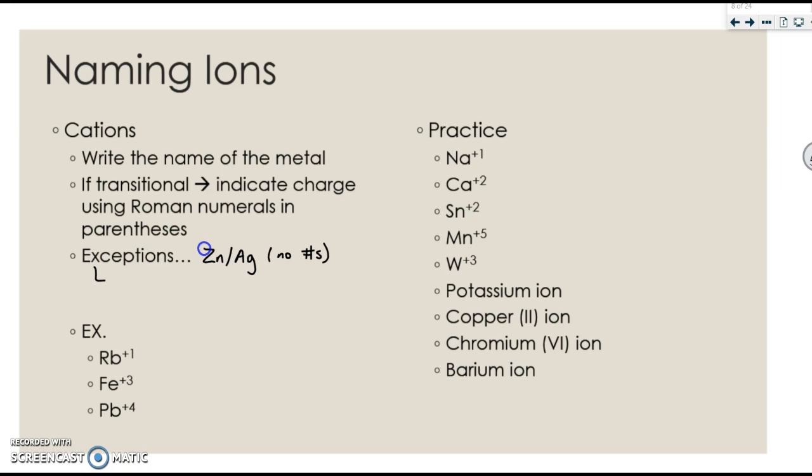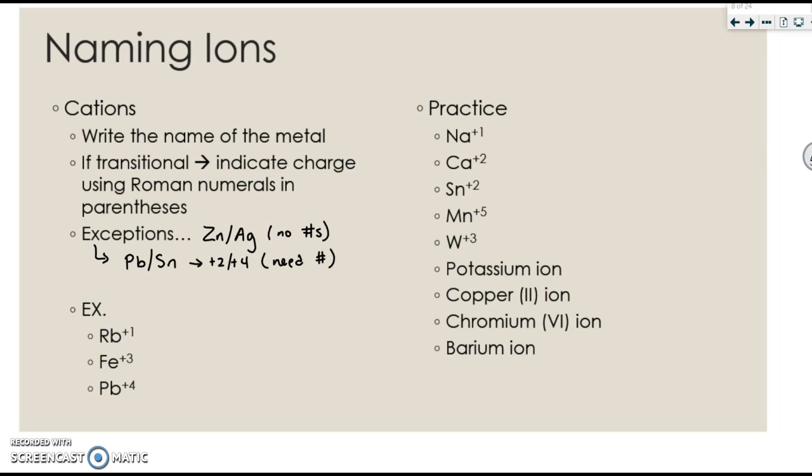And actually two that are not transitional, which are lead and tin. So both lead and tin can actually be a +2 or a +4 charge. So because they have different options for charges, they require a Roman numeral.